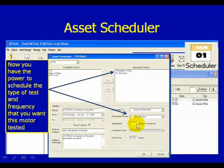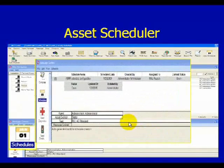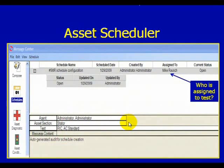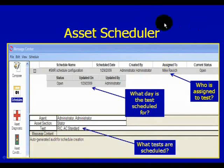We determine the frequency that we want those tests to accomplish. We also have the ability to generate a 7-day in advance warning. When we look in our message center, we'll see that we have a list of the schedules that have been determined for this asset. In there, we determine who's assigned to test this motor, what day the test is scheduled for, and what tests are scheduled.